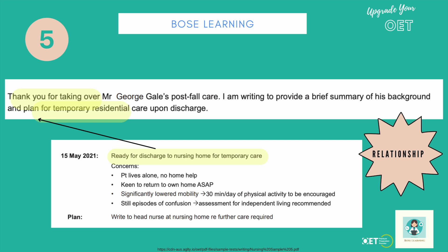Number five is the relationship. Make sure you make it clear if there's any kind of existing relationship or if it's a new relationship — that is, how does the reader know the patient, or how does the writer know the patient? In this sample, the reader doesn't know the patient at all because they're someone new coming for temporary care, so the letter says: 'Thank you for taking over his care,' making it very clear this is temporary. You could also say 'I am writing to introduce Mr George Gale, who is coming to you for temporary residential care following a fall.' That's another valid way of expressing the relationship.